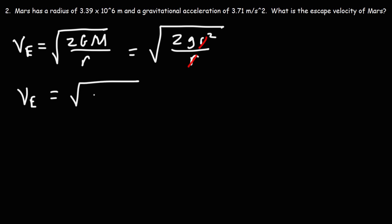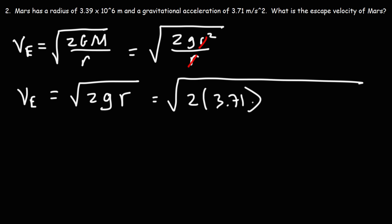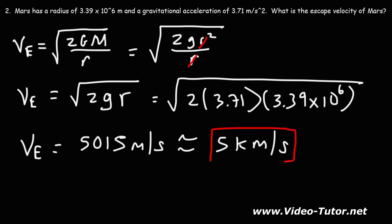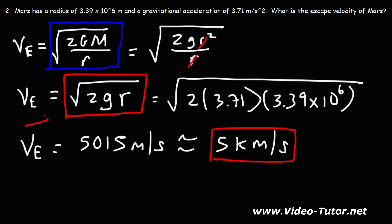For Mars, that's the square root of 2 times 3.71 times 3.39 × 10⁶. The escape velocity of Mars is 5,015 meters per second, or approximately 5 kilometers per second. That's how you can calculate the escape velocity for any planet — if you know the mass and radius, use the first formula; if you know the gravitational acceleration and radius, use the second form of the equation.